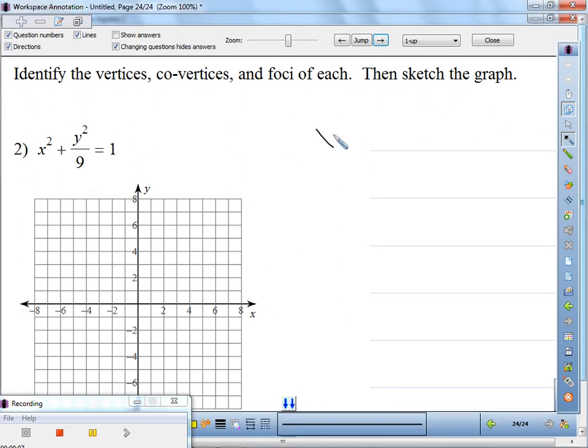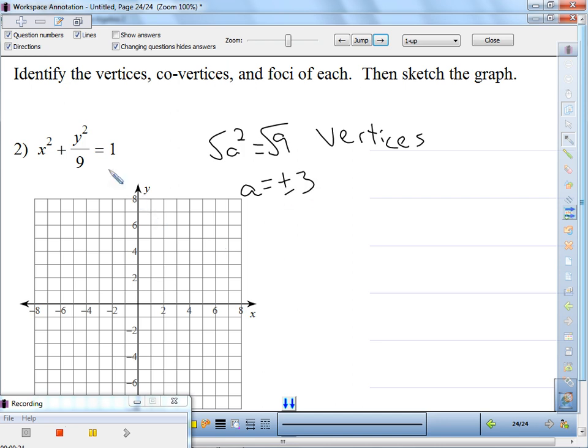We're going to do that by taking a squared and taking the square root of it. In this case, a squared equals 9. Taking the square root of both sides, we get a equals plus or minus 3. Since a is in the y location, our vertices are (0, ±3).